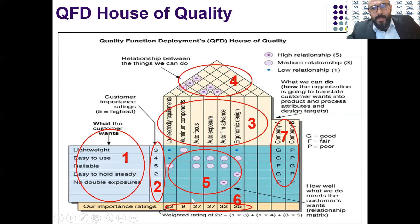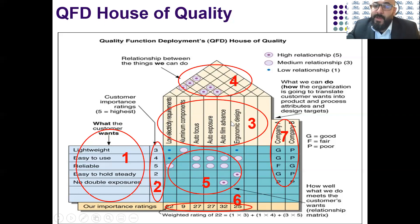The last component, number six, is the most important: it's the importance score — which technical specification we should focus on. By looking at the measure, you will see that 32 looks high. So we should focus on auto film advance in order to meet the customer needs.